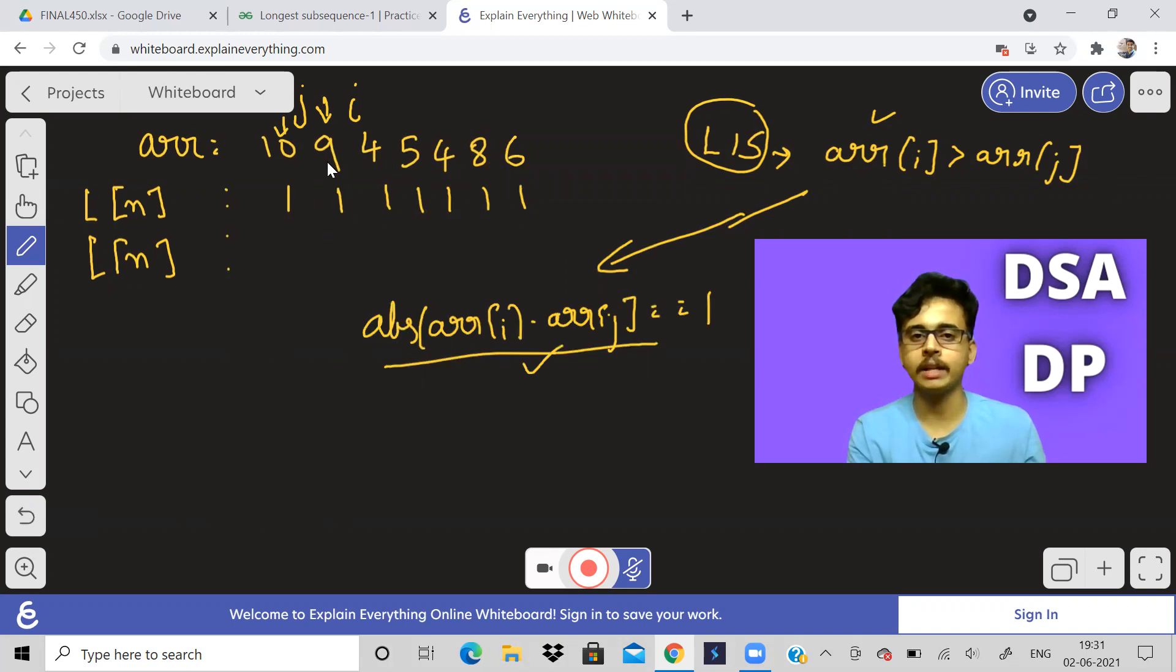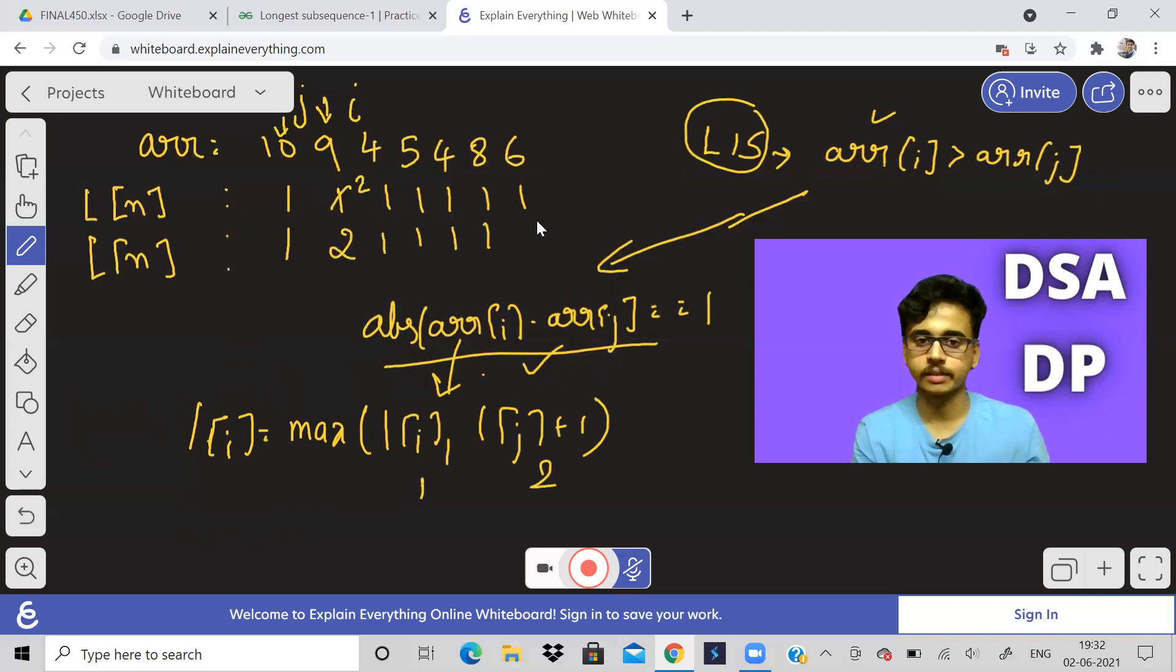So now let us see how it happens. See what is array of I, nine, array of J, ten. Absolute of nine minus ten is one. So when absolute of this value is equal to one, then what do we do? We will say L of I is maximum of L of I or L of J plus one. So what is L of J? One. One plus one, two. What is L of I? One only. So this value will change to two. So the array will become like this. Next iteration, what will happen?